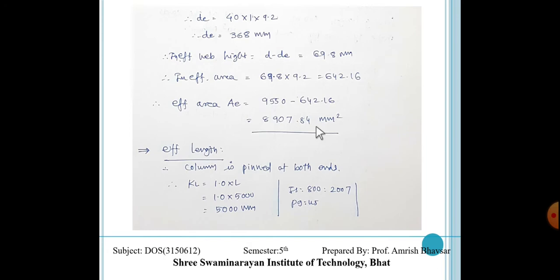For section classification, epsilon = 1 (since FY = 250). The web check shows it is not okay, so we reduce the web length. d = 500 − 2×14.1 − 2×17 = 437 mm. Effective depth = 40 × epsilon × TW = 368 mm. Difference = 69.8 mm. Ineffective area = 69.8 × 9.2 = 642.16 mm². Net effective area AE = 9550 − 642.16 = 8907.84 mm². For the long column, we now proceed to buckling class and effective length calculations. With pinned-pinned ends (IS 800 page 45), KL = 1 × 5000 = 5000 mm.